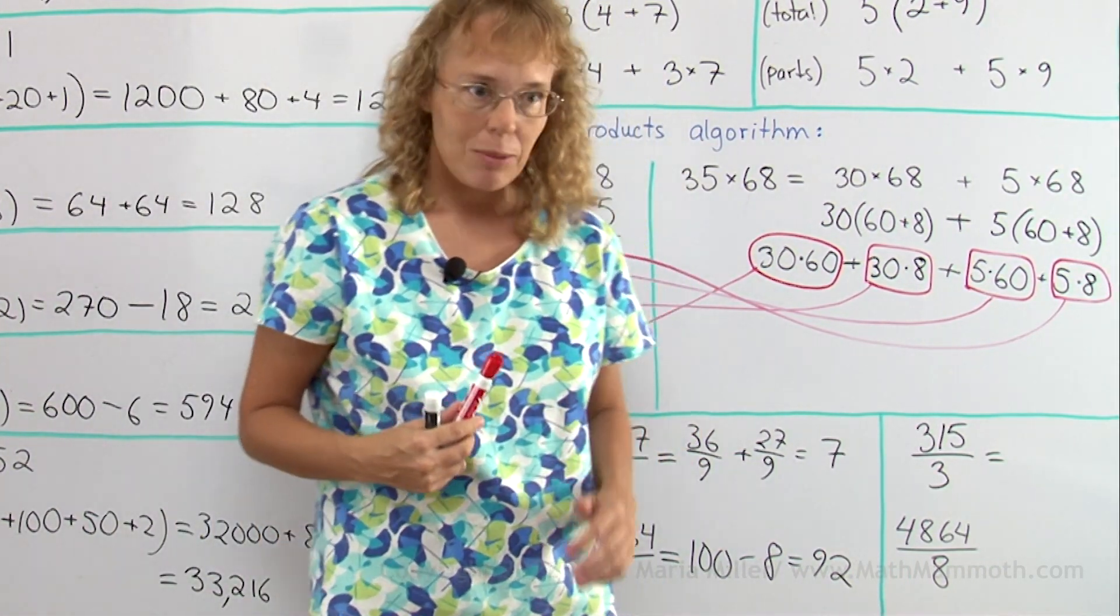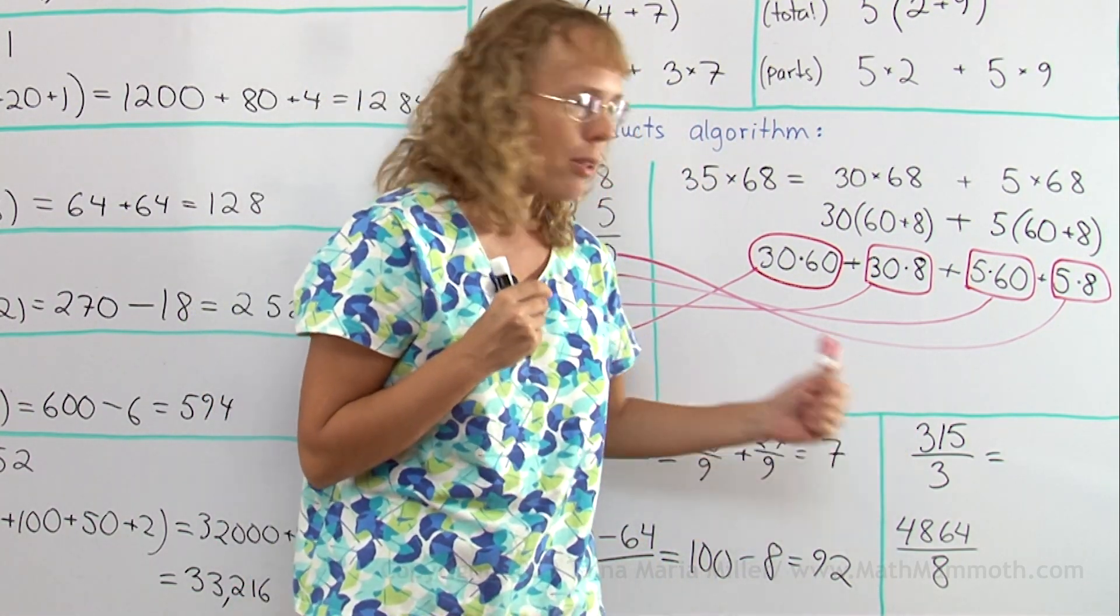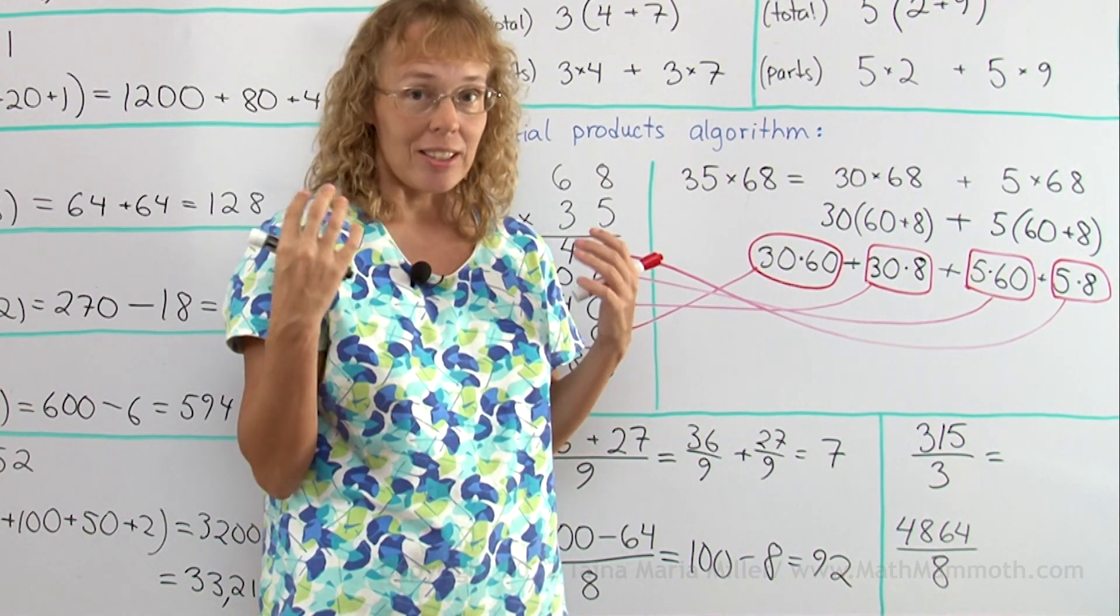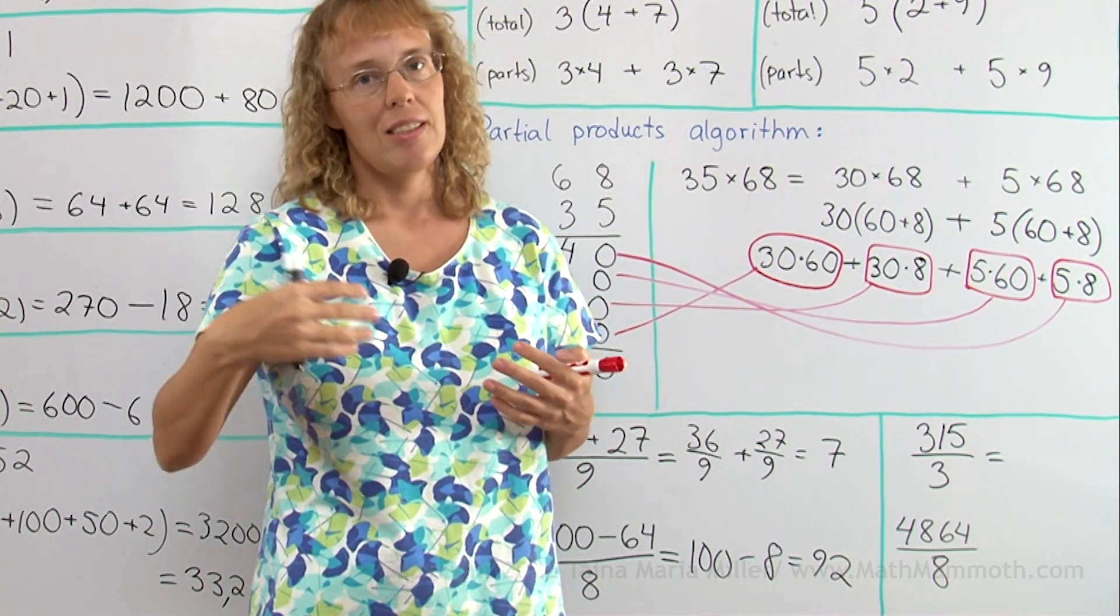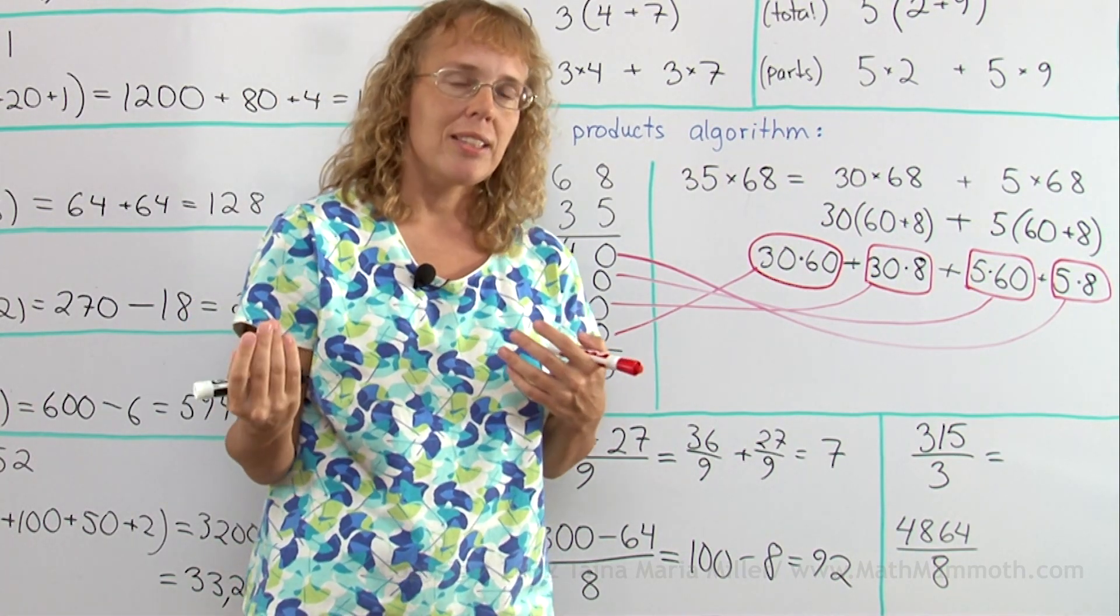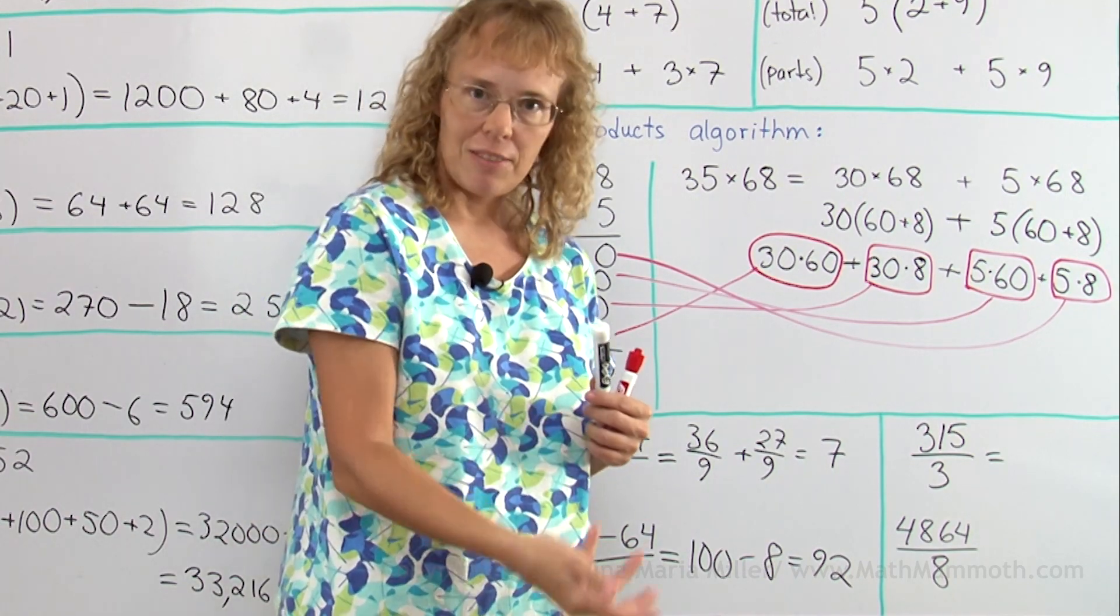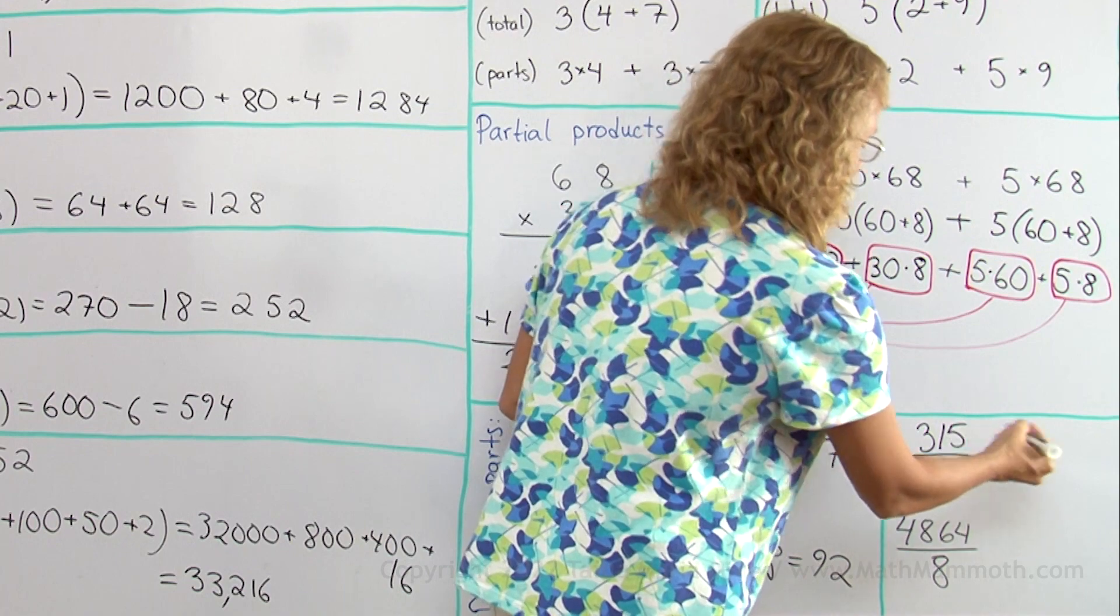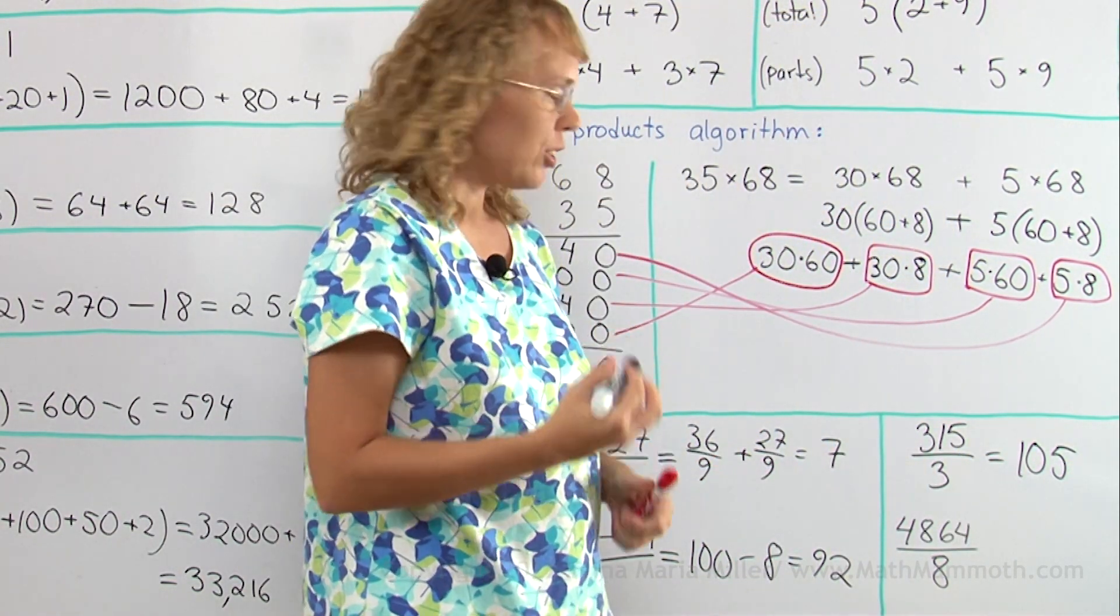I can use this principle with these division problems. I will break this top number in parts in my mind, like a sum. 315 is the same as 300 plus 15, and both of those parts are divisible by 3 very easily. So 300 divided by 3, and 15 divided by 3. So I will get 100 and 5. Very simple form of division.